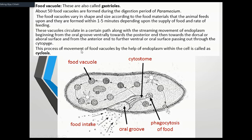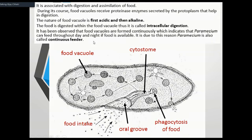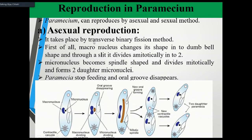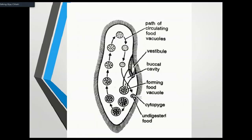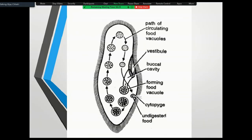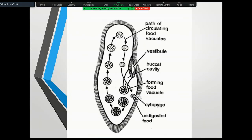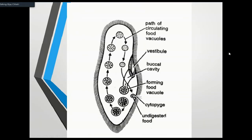The process of movement of food vacuoles by the help of endoplasm within the cell is called cyclosis. This completes the internal structure of Paramecium. See you next time.